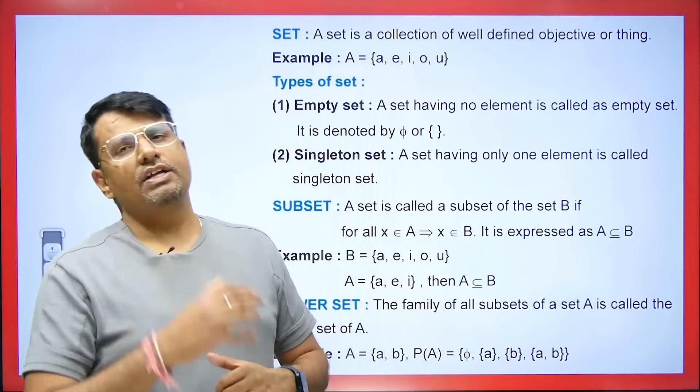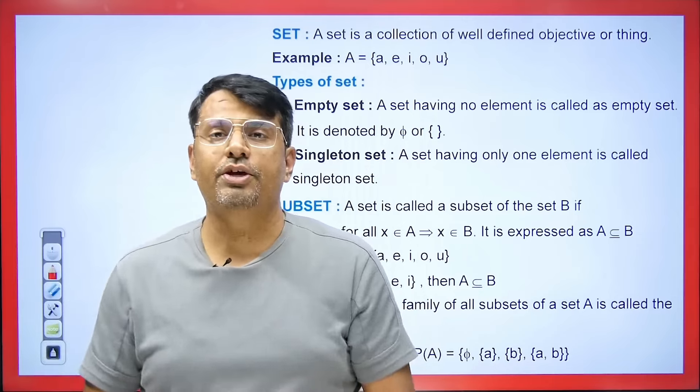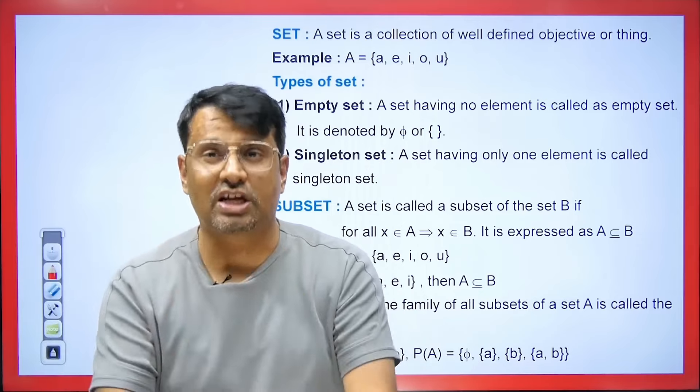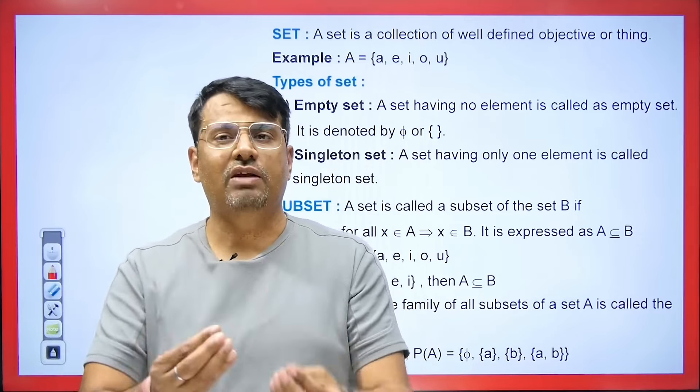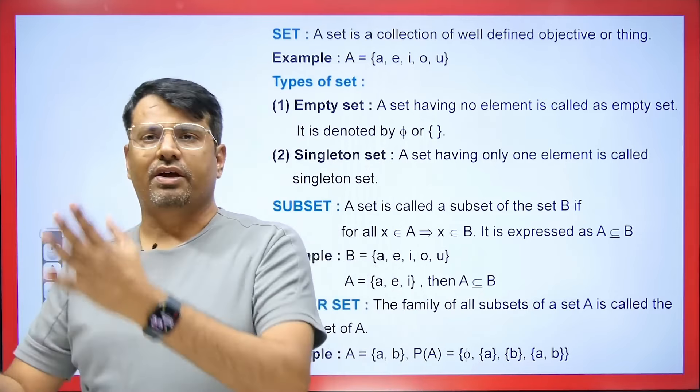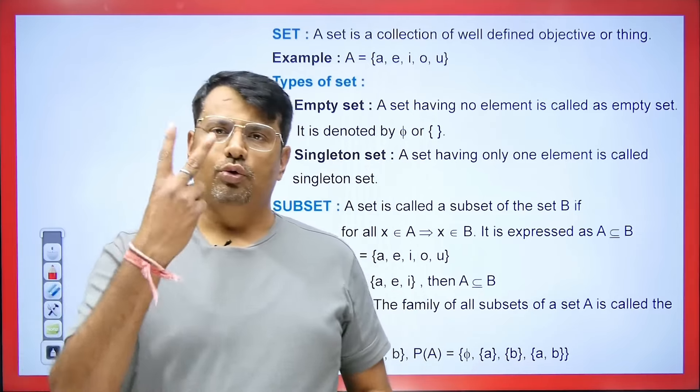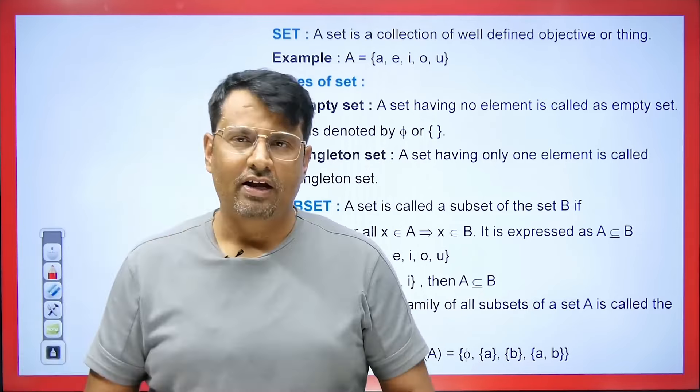Now the singleton set. A set having only one element is called a singleton set. For example, if I ask you to name the number between 1 and 100 that is both even and prime, the answer will be 2, which is both even and prime. So the set of this will be a singleton set.